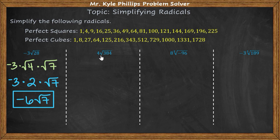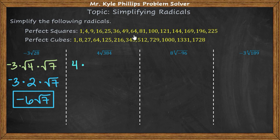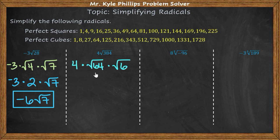Next we have 4 times the square root of 384. We want to find the largest perfect square that can go into 384 and give a whole number — that is going to be 64. So we have 4 times the square root of 64 times the square root of 6.